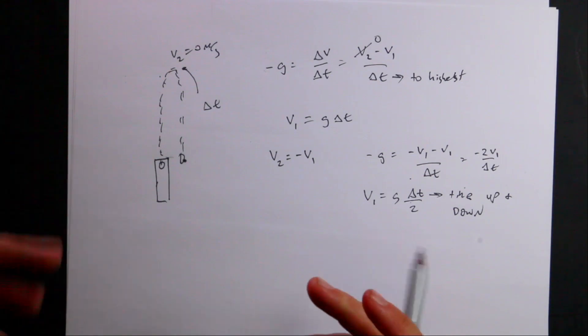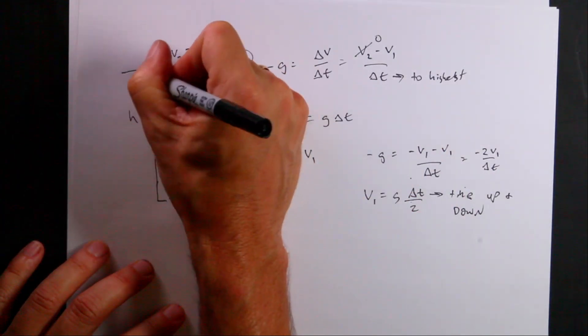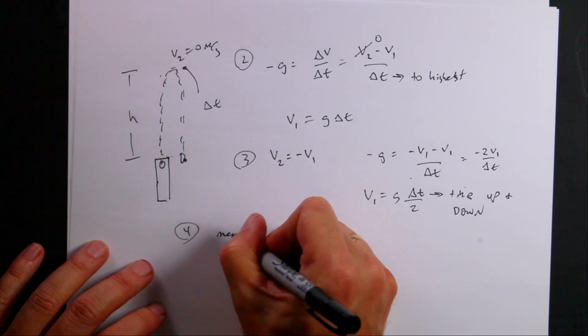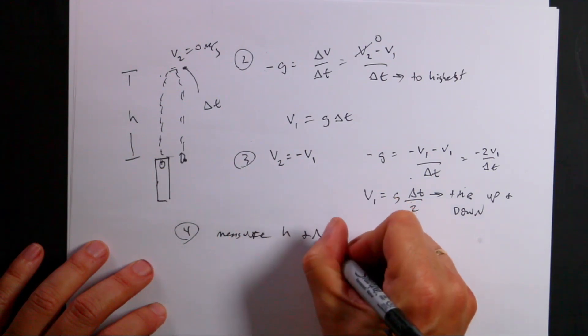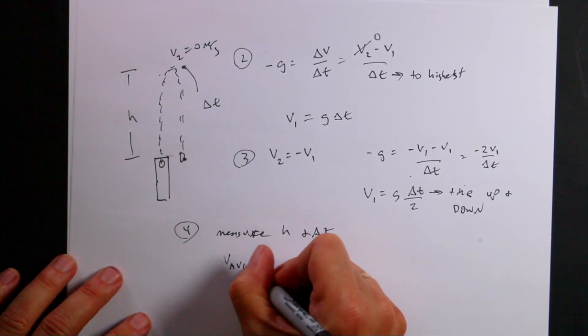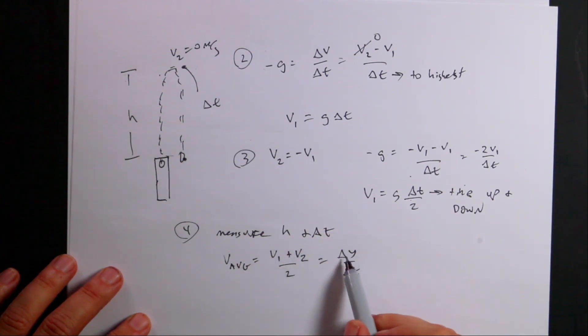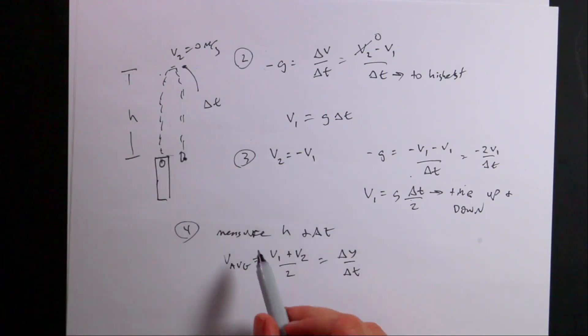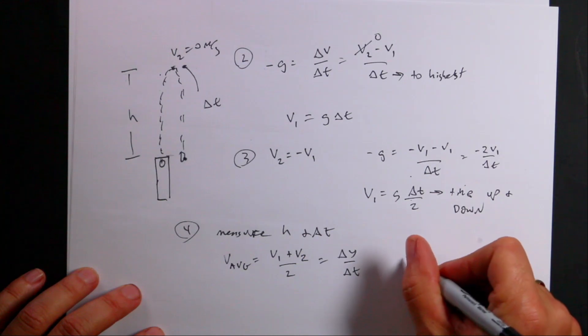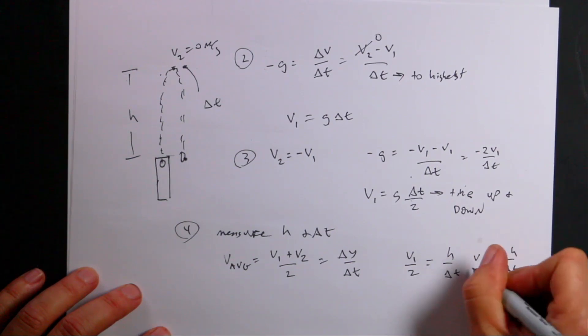Now, what if I... So you see I've already got three methods. This is number two. This is number three. What if I do this? What if I measure the height that it goes? So I shoot it. I measure the height and the time. Measure H and delta T. Well, in that case, I can again use this thing. I can use the definition of average velocity. I can say V average is V1 plus V2 over 2 equals delta Y over delta T. So if I measure delta Y, which is H, and I measure delta T, I get the average velocity. And up here, the velocity at the end is zero. So I could say V1 over 2 equals H over delta T. So V1 equals 2H over delta T.